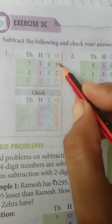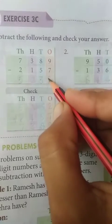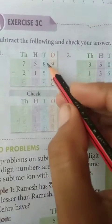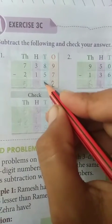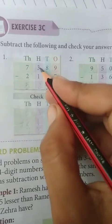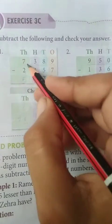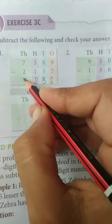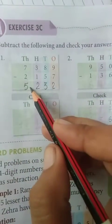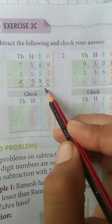Once place. 9 minus 7 is equal to 2. 8 minus 5 is equal to 3. 3 minus 1 is equal to 2. 7 minus 2, 5. So answer is 5,232.